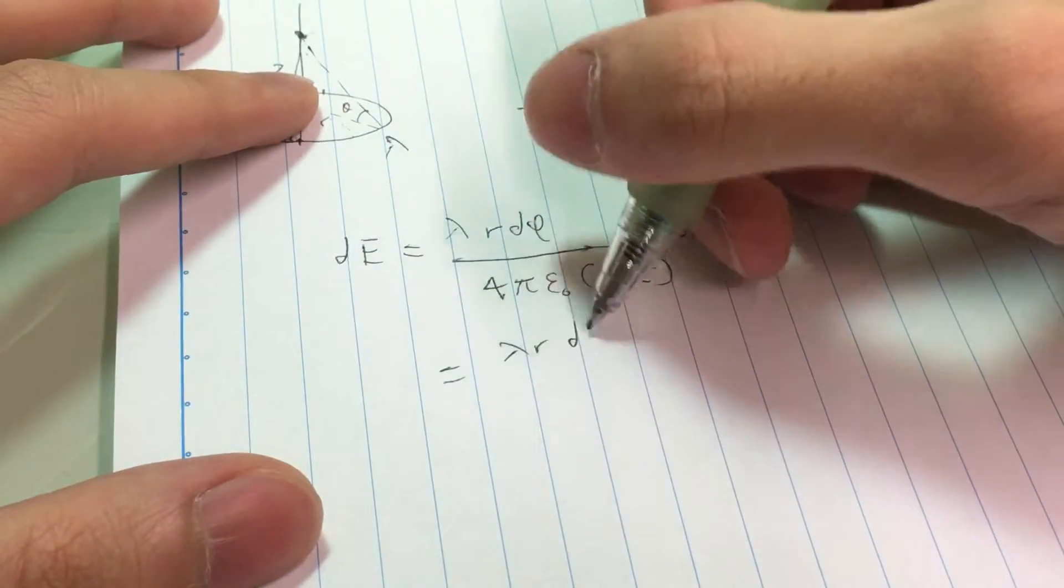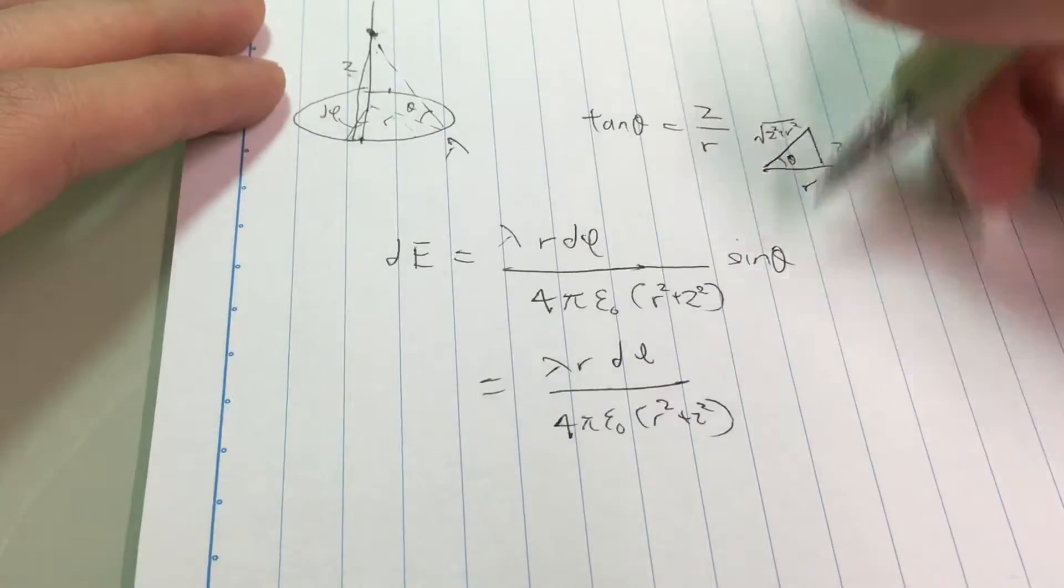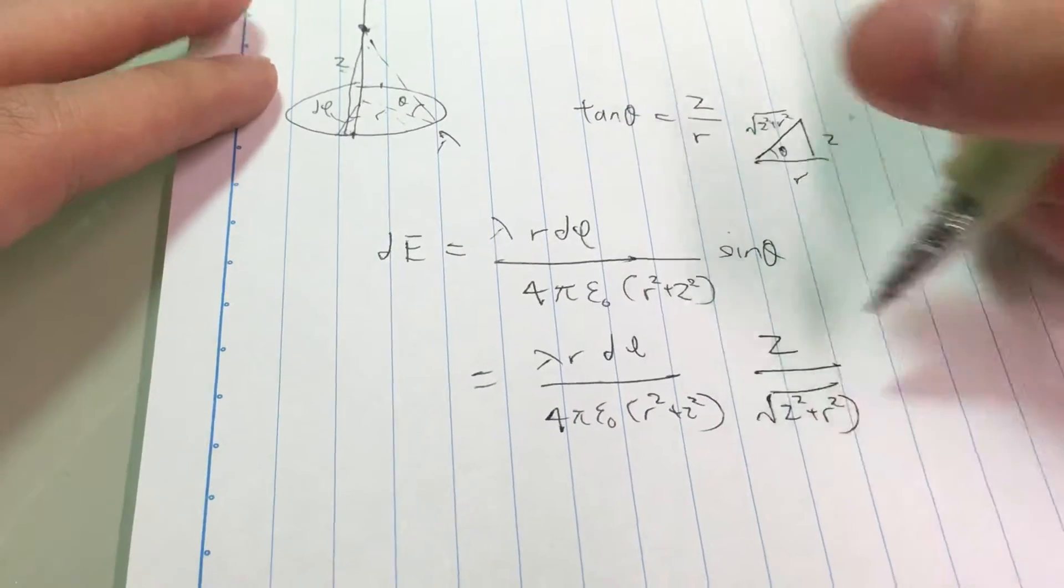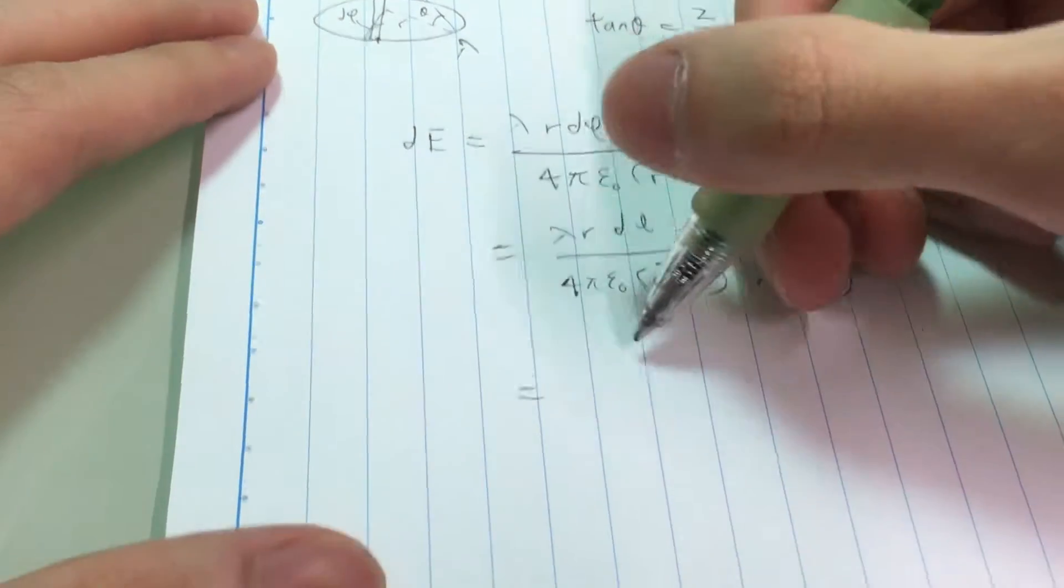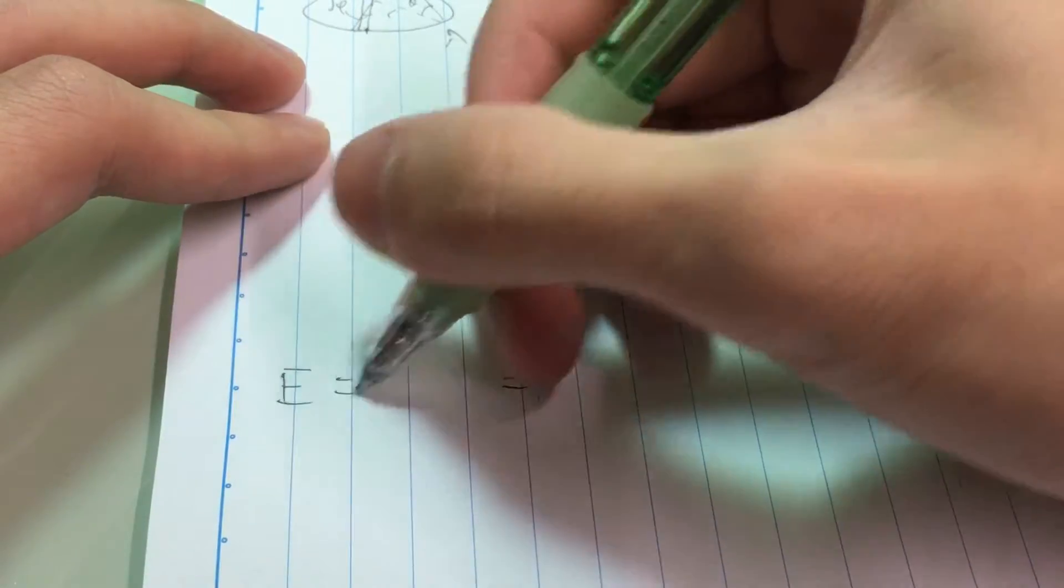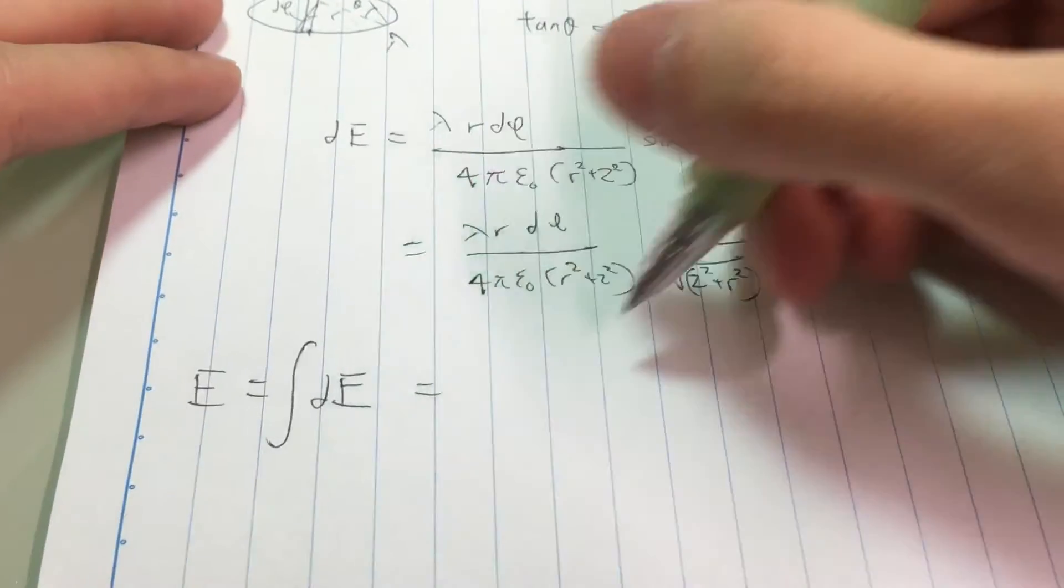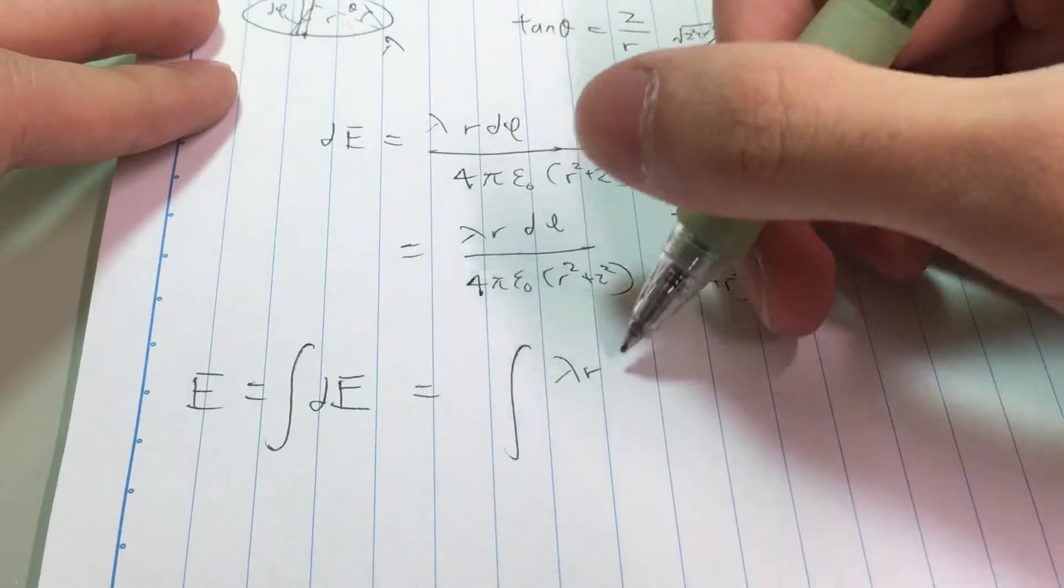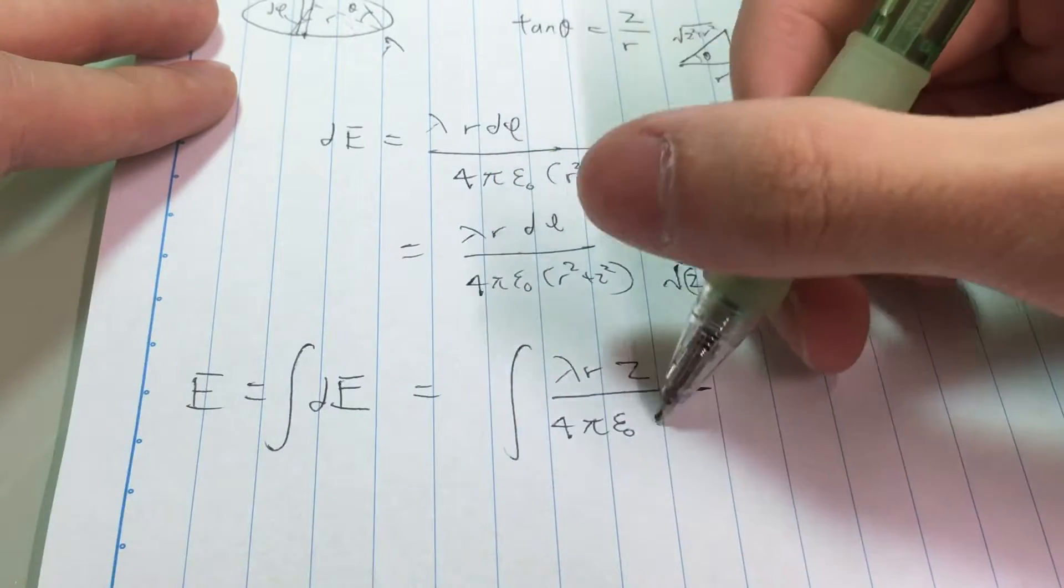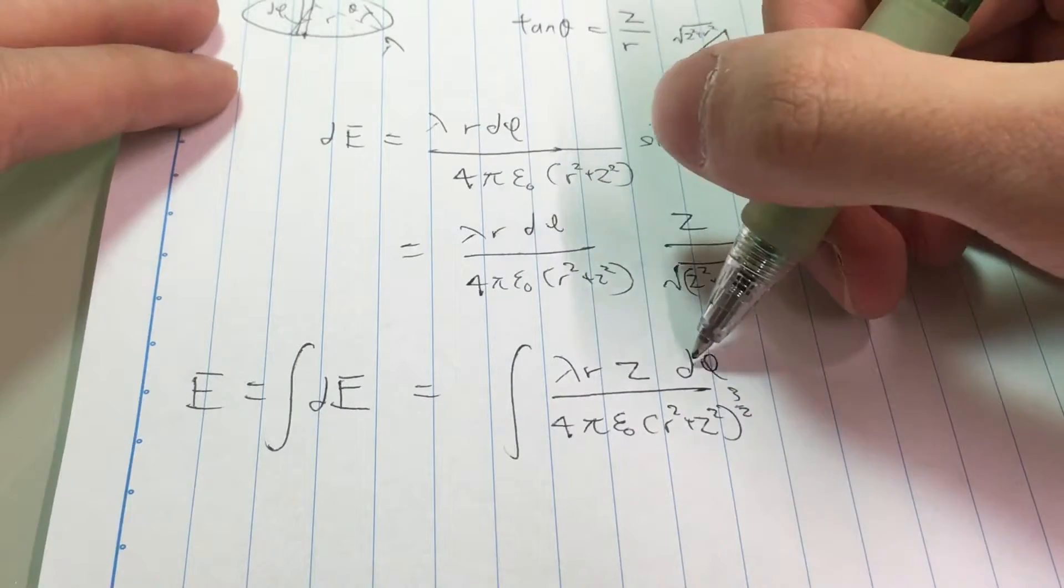Sine theta is just z divided by this. And now all we have to do is to integrate both sides. The electric field is the total of adding up all these tiny components into this one joint field.